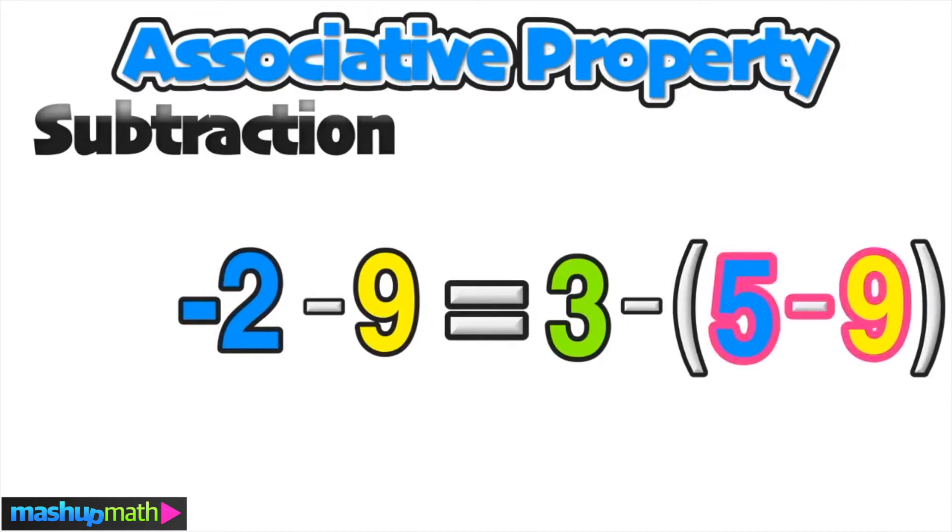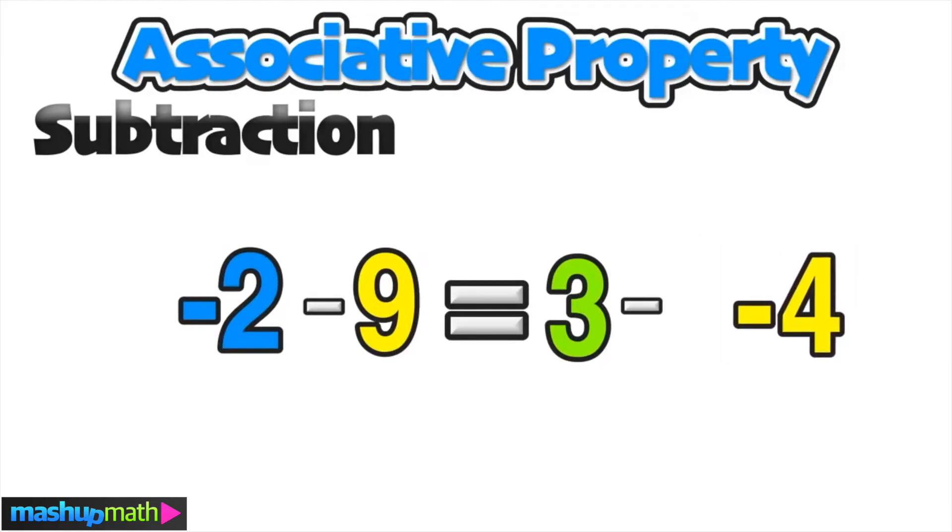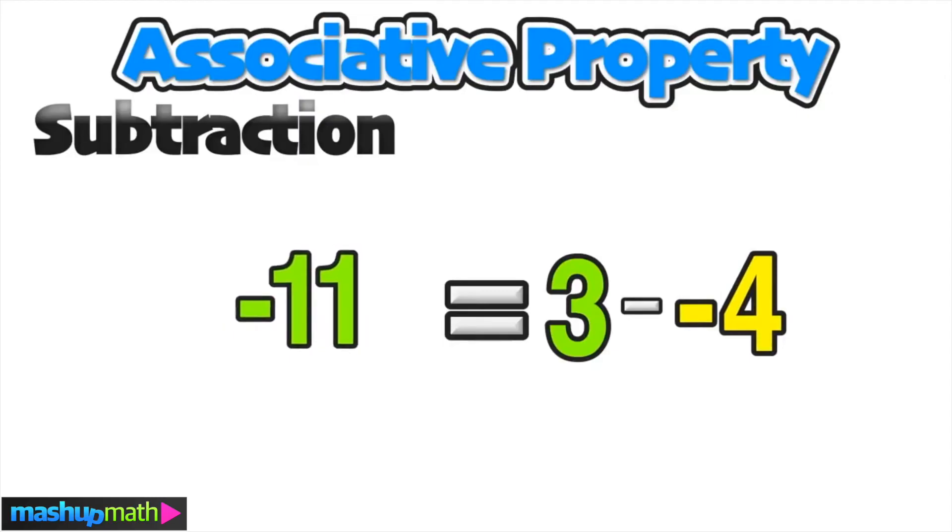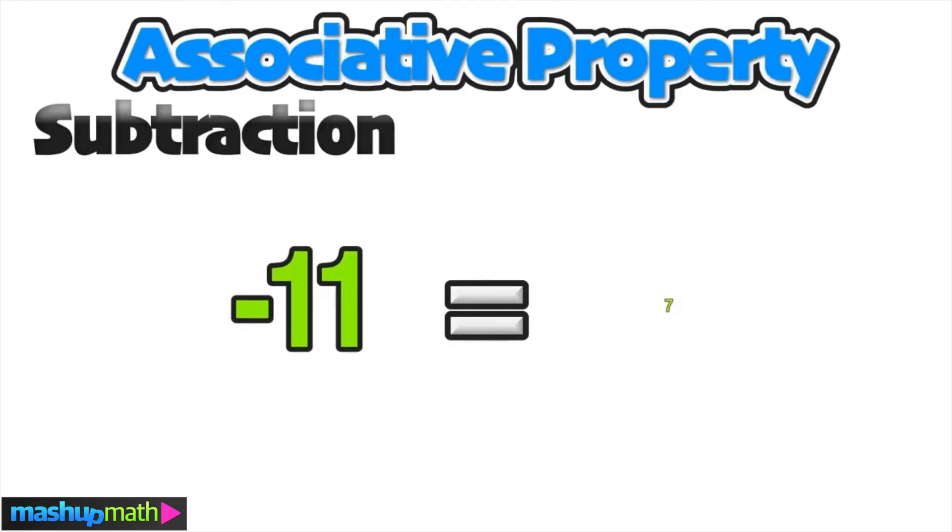Same process here. 3 minus 5 on the left side in parentheses is negative 2. Jump over to the right side: parentheses 5 minus 9 equals negative 4.